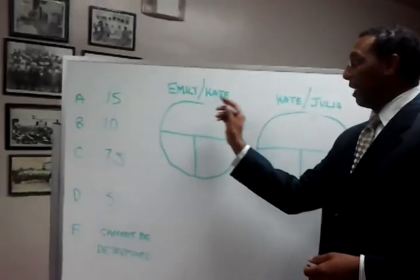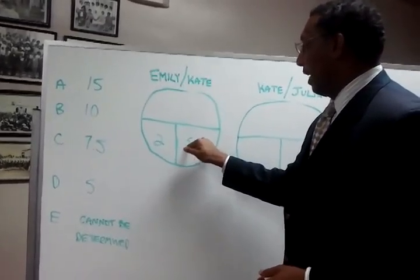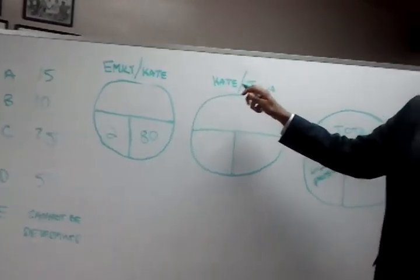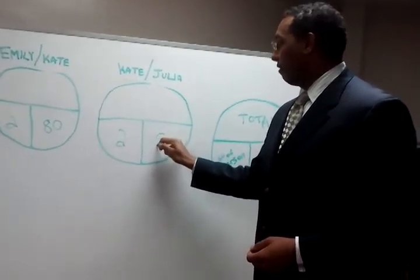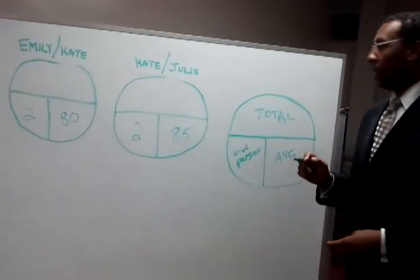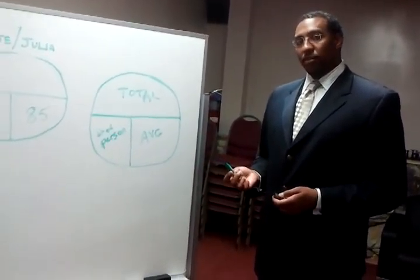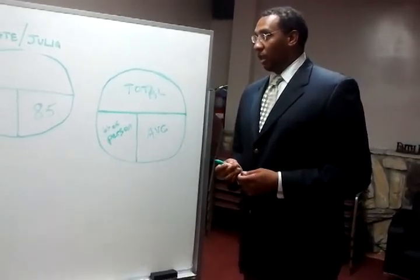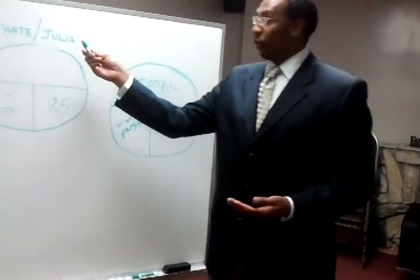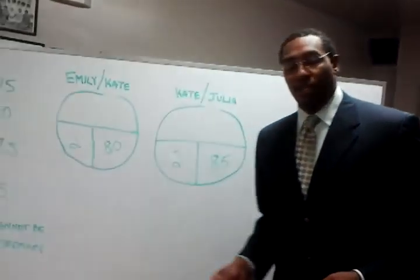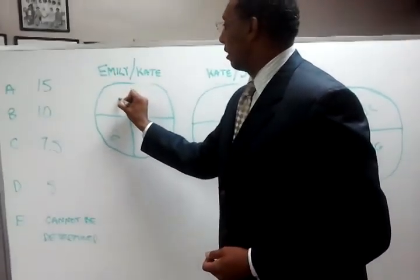On the first chart, Emily and Kate — two people. Emily and Kate's average was 80. On the Kate and Julia chart, again, two people, and their average was 85. Coming back to our model, we know that we must multiply across to get the total number. We have to get the total number to answer the question: what's the difference between Julia and Emily? So let's do the math. In the first chart, we know two times 80 is 160.